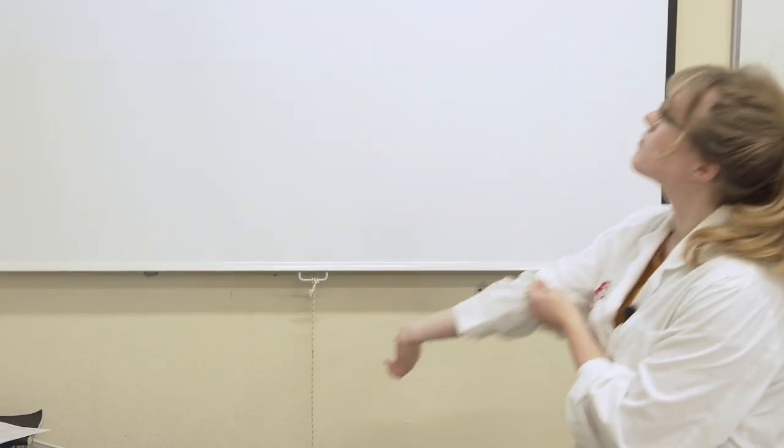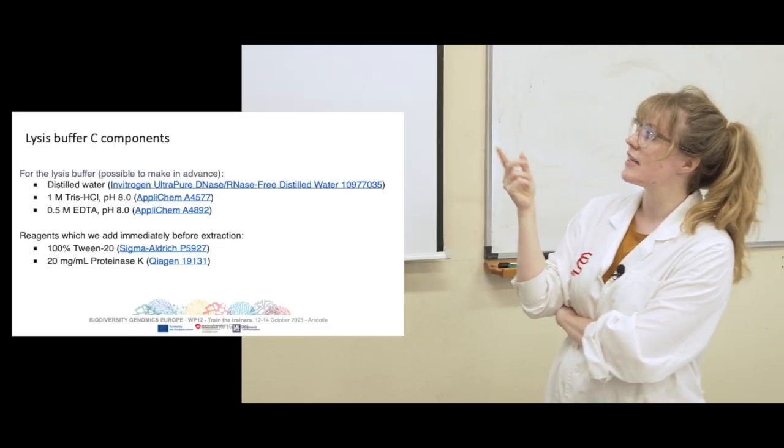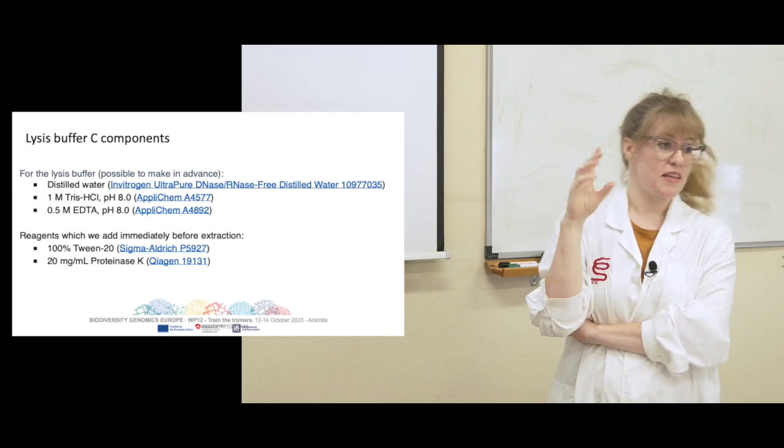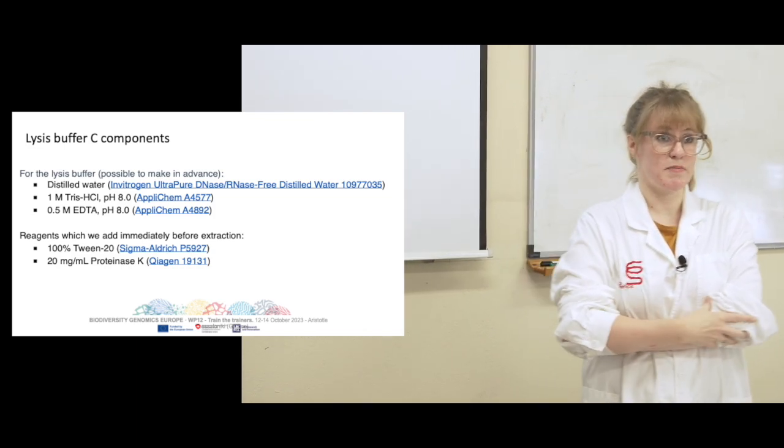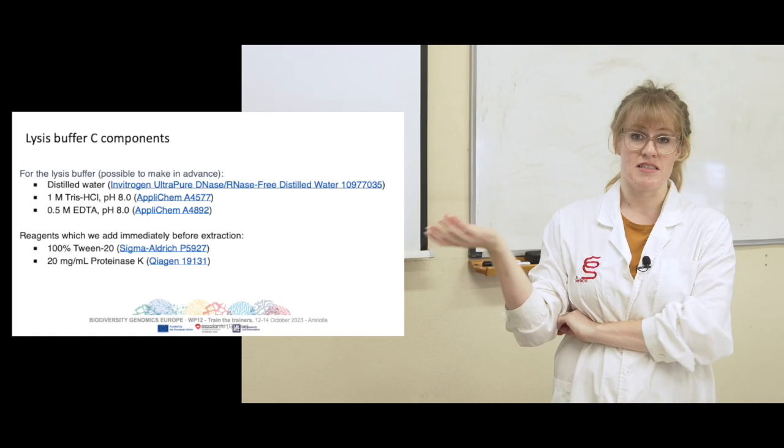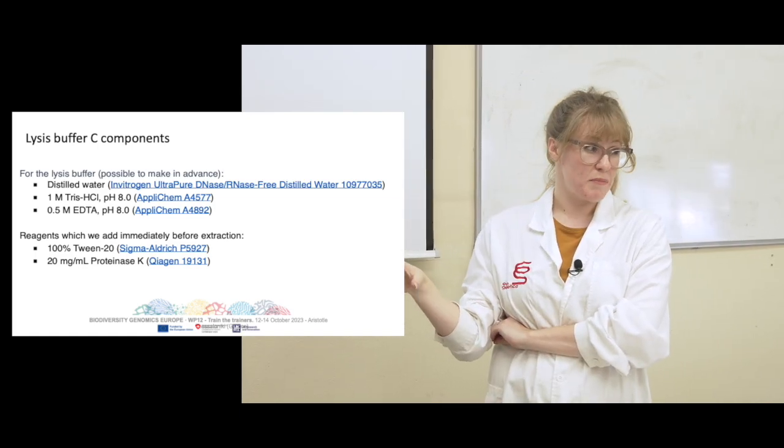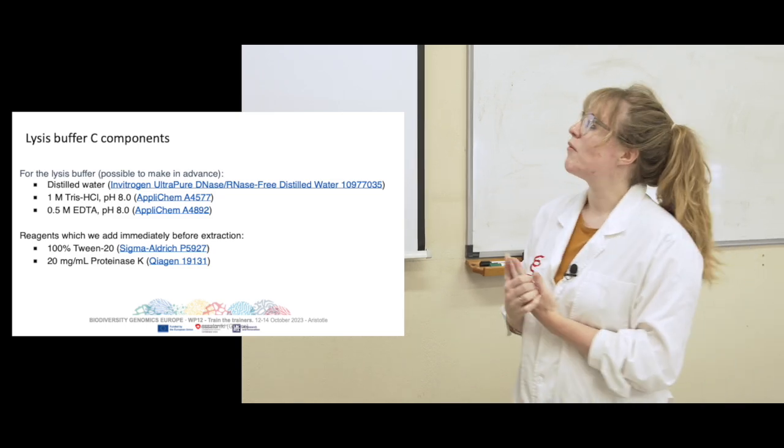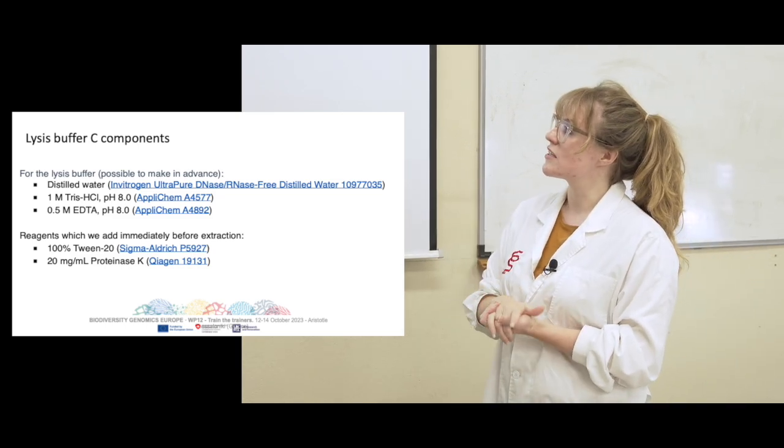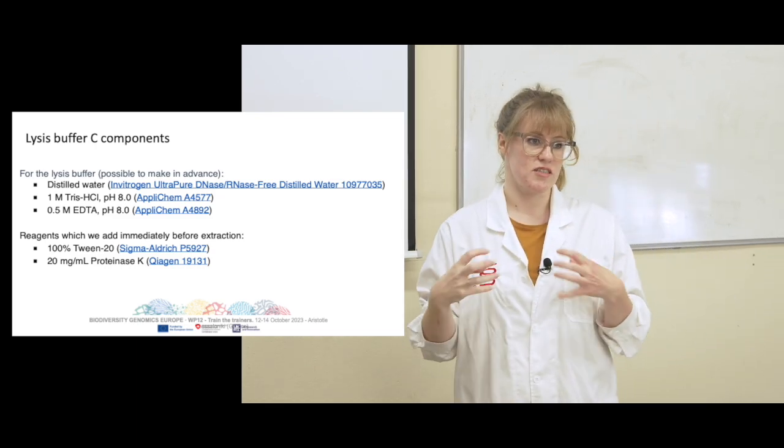So the lysate buffer C components are there's five components: water, distilled water, Tris-HCl, and EDTA. So it's possible to make the first three in advance. So in Sanger there's a, we're lucky to have a media prep team who can make that in advance. They autoclave it and then we have that as a stock all the time in the lab. And then on the day of extraction, we always stick to on the day of just adding the 100 tween and the proteinase K so that it's just fresh because it's to try and let the, get the proteinase K when it's most active.